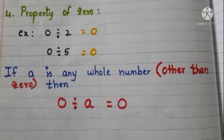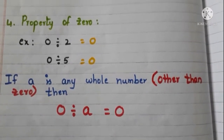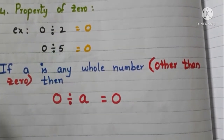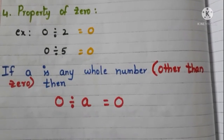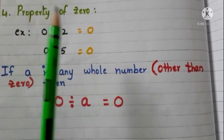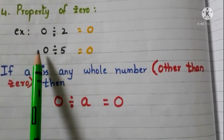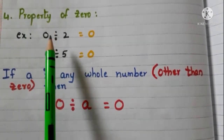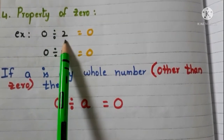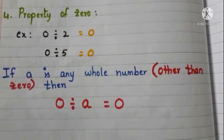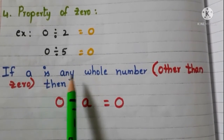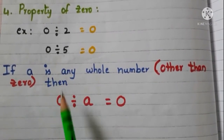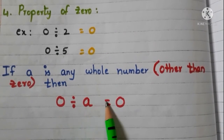Now property of zero. Let us see with examples. Take the whole number 2 and divide 0 with 2 — the quotient is 0. Now take another whole number 5 and divide 0 with 5 — the quotient is 0. When we divide 0 with a whole number, we get the quotient as 0. If a is any whole number other than 0, then 0 divided by a is equal to 0.